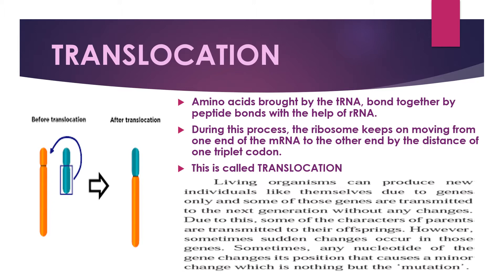Sometimes sudden changes occur in genes — any nucleotide of the gene changes its position, causing a minor change which is known as mutation. A brand new type of gene is then transferred to the next generation. This process of minor changes in the genes is called mutation.